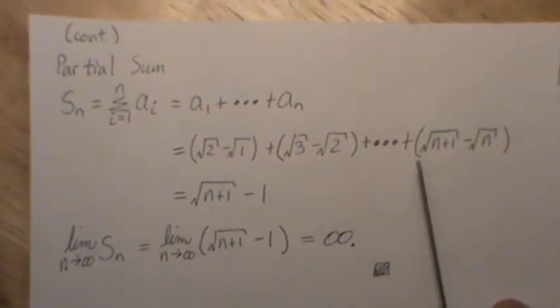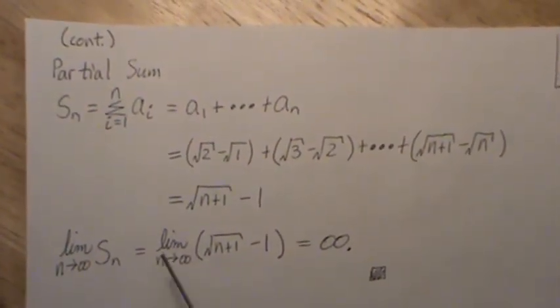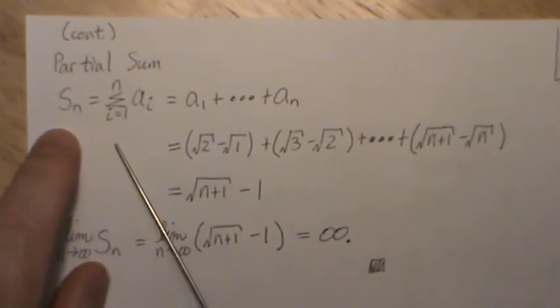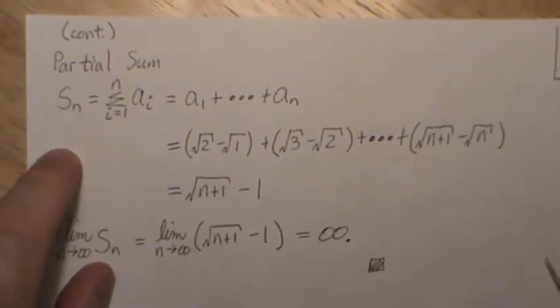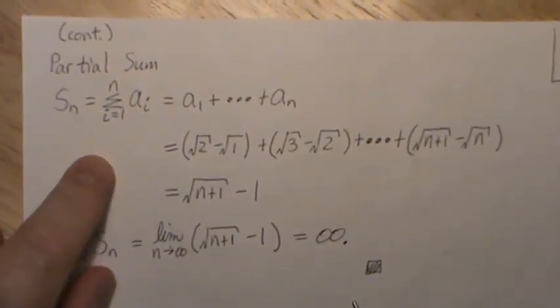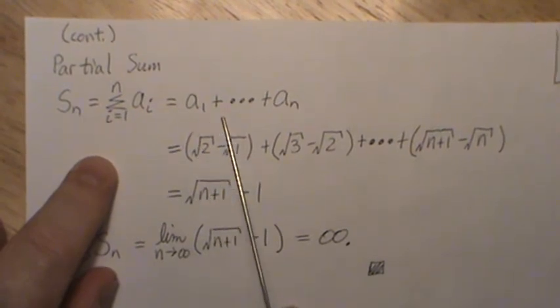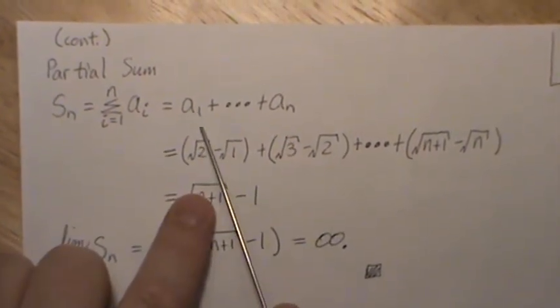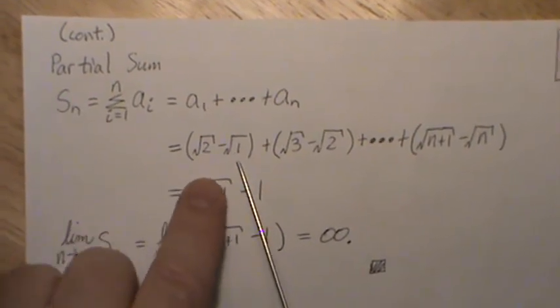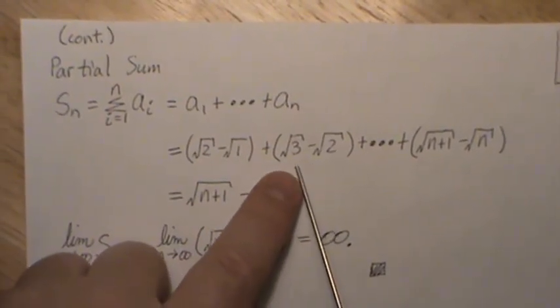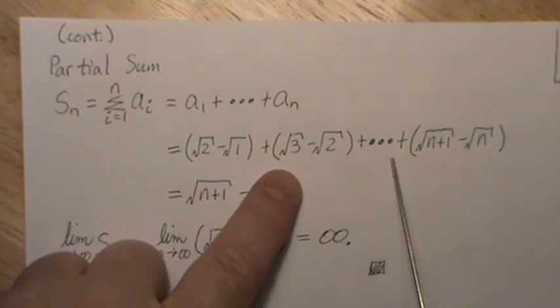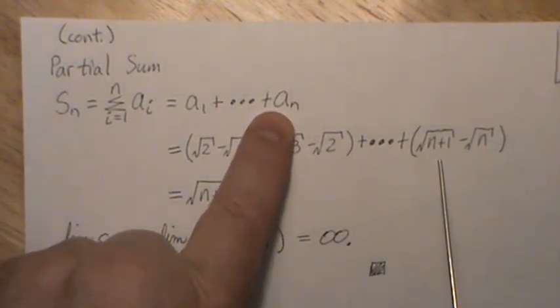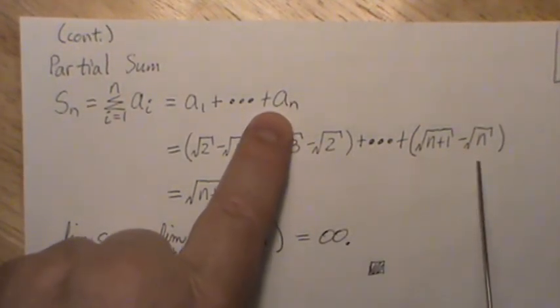Now let's look at the partial sum of this sequence and call it S_n, and that's the sum from i equals one to n of a_i. So that's a_1 plus all the way to a_n. Now if we were to put the terms in here, that's square root of two minus one. Next term is square root of three minus square root of two, all the way to square root of n plus one minus square root of n.